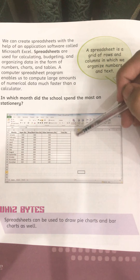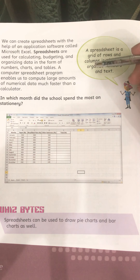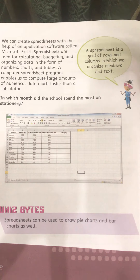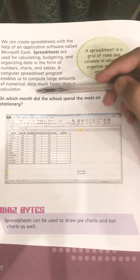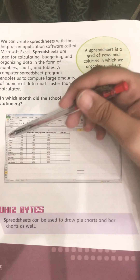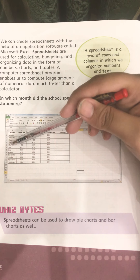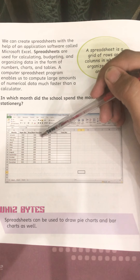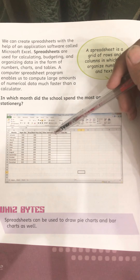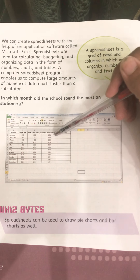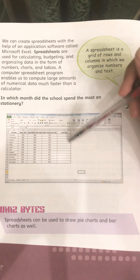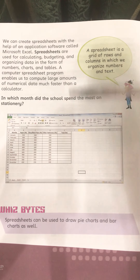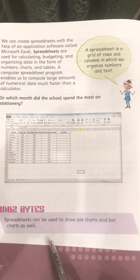A spreadsheet is a grid of rows and columns in which we organize numbers and text. For example: in which month did the school spend the most on stationery? You have to look at January, February, March, April, May, June, July, September, October, November, and December — the cost of blue and black pens and other stationery for each month. You apply the formula for each month and Microsoft Excel will provide the answer. Spreadsheets can also be used to draw pie charts and bar graphs.